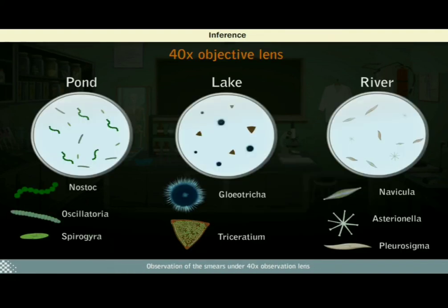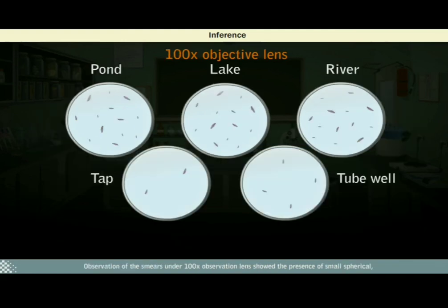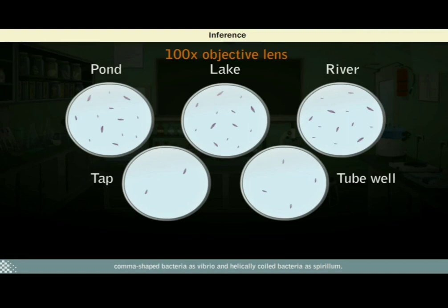Observation of the smears under 40x objective lens showed the presence of numerous cyanobacteria and diatoms. The cyanobacteria identified include Nostoc, Gloeotrichia, and Oscillatoria. The diatoms identified are Pleurosigma, Navicula, Asterionella, and Triceratium. Algae like Spirogyra are also found to be present. Observation under 100x objective lens showed the presence of small spherical, rod-shaped, comma-shaped, and helically coiled bacteria. The spherical bacteria are known as cocci, rod-shaped bacteria as bacilli, comma-shaped bacteria as vibrio, and helically coiled bacteria as spirillum. The presence of a large number of organisms indicates increased amounts of organic pollutants in the water bodies.